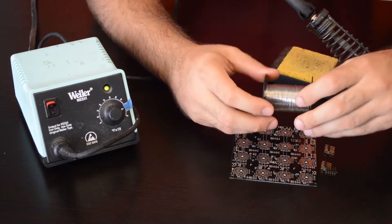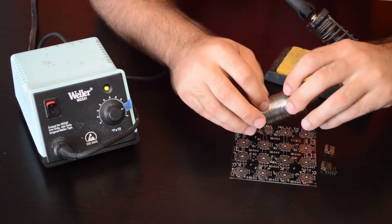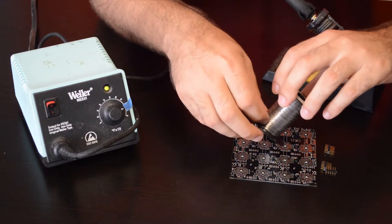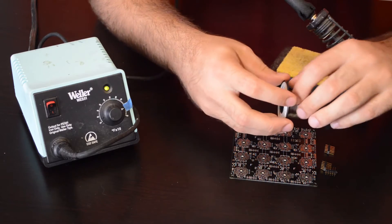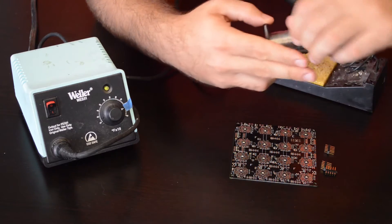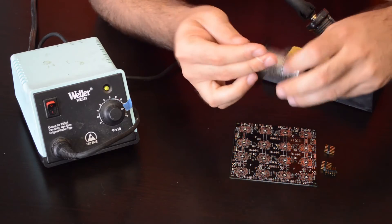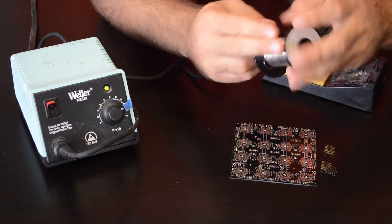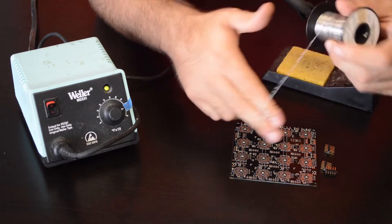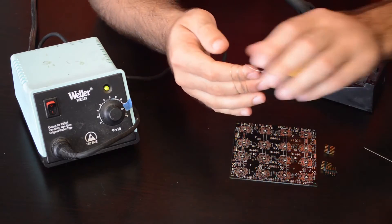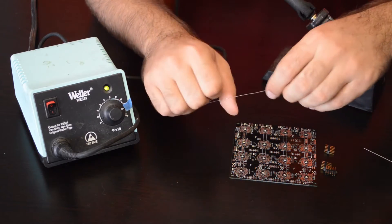For starters I like to roll some of this off the spool so it's easier to deal with, and just wrap it around my fingers. And so now I have just a little bit of solder I can mess with.